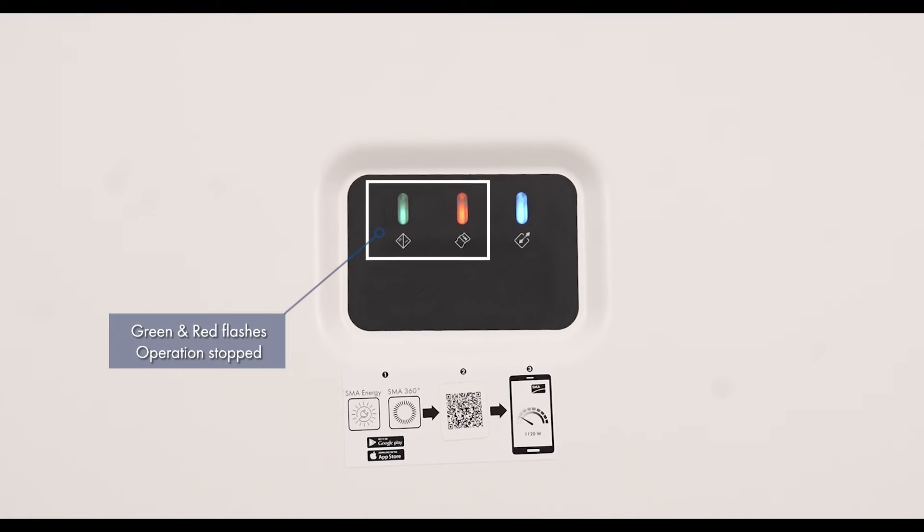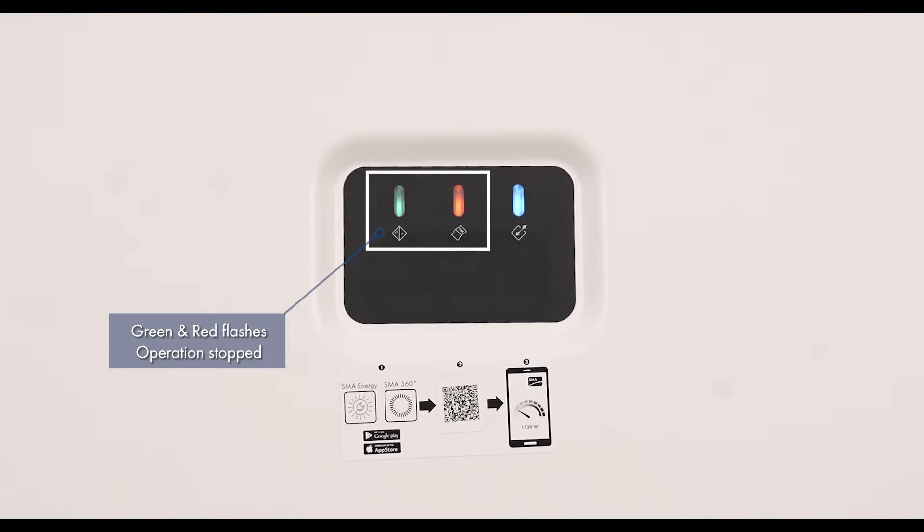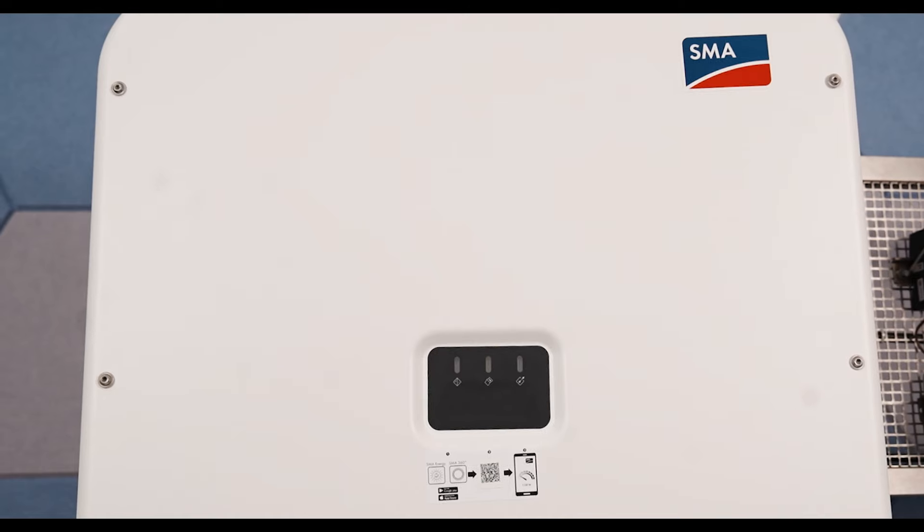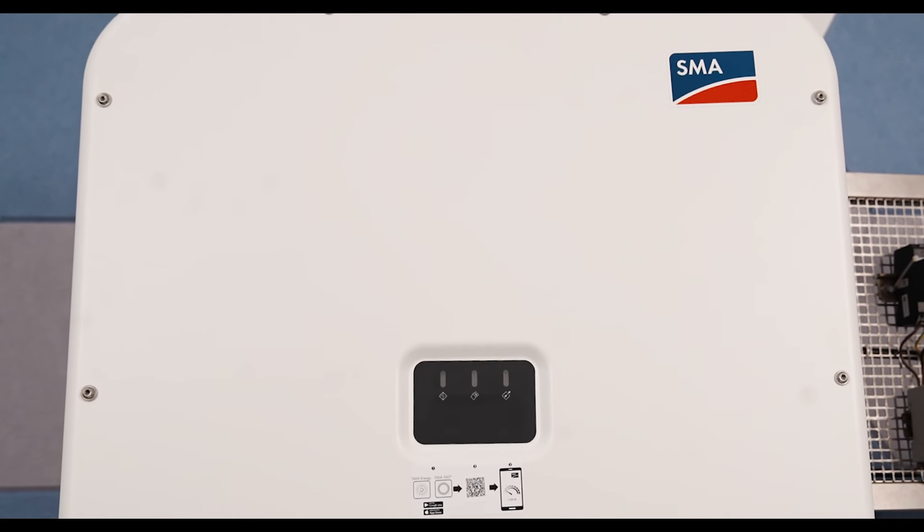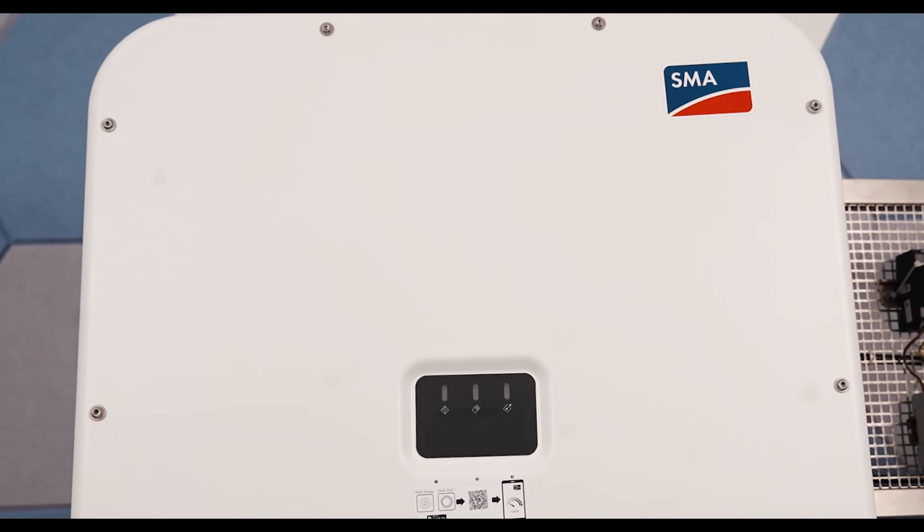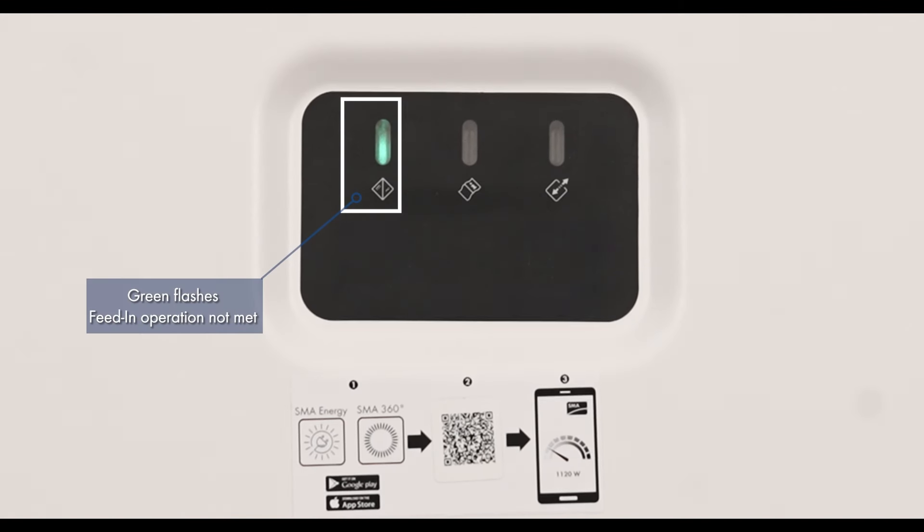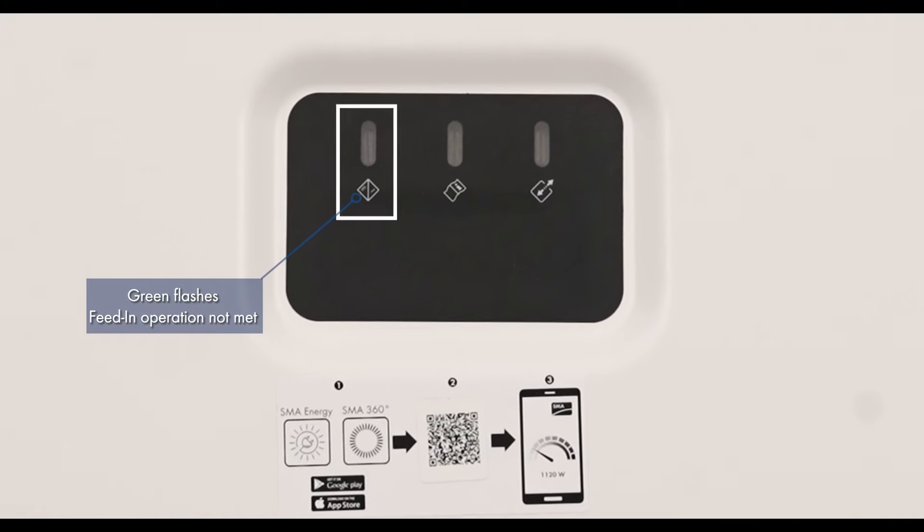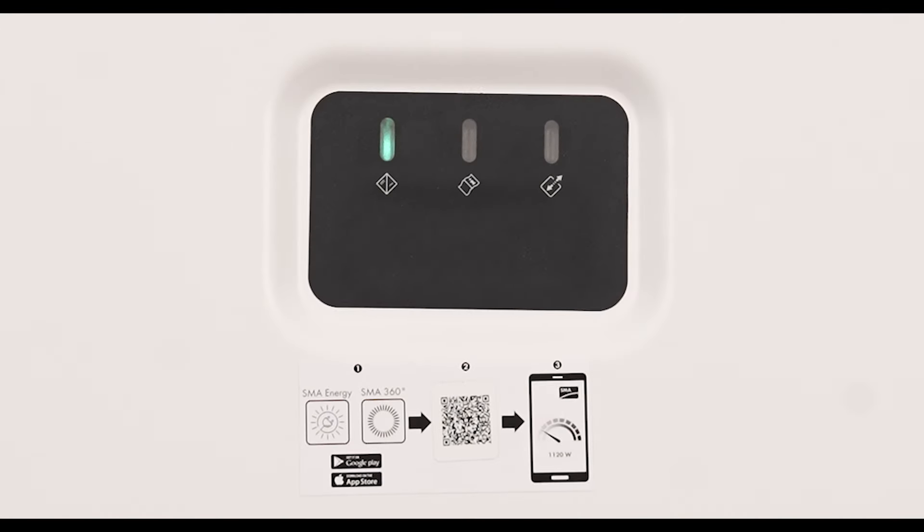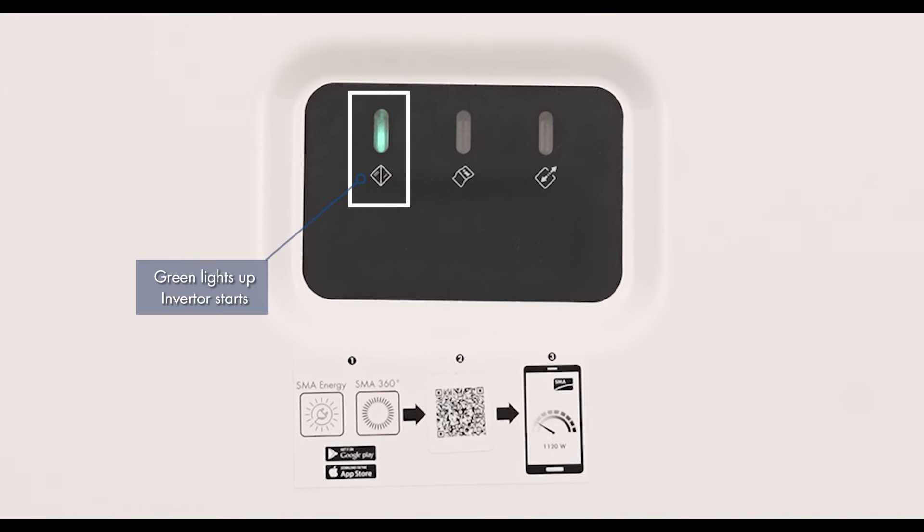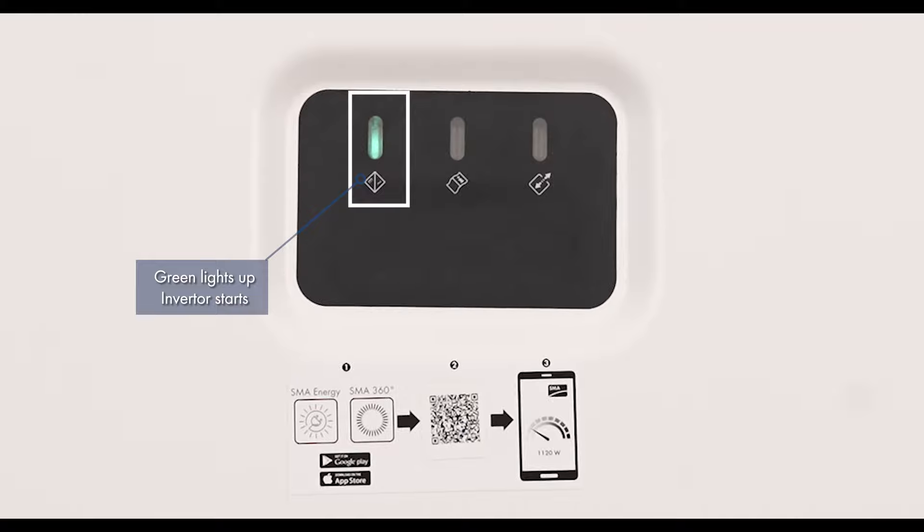If the green and red LEDs flash simultaneously during initial commission, operation is stopped because country data set selection is not done yet. For the inverter to begin operation, the configuration must be completed and a country data must be set. If the green LED is still flashing, the conditions for activating feed-in operation are not yet met. As soon as the conditions for feed-in operations are met, the inverter starts with feed-in operation, and depending on the available power, the green LED will light up continuously.